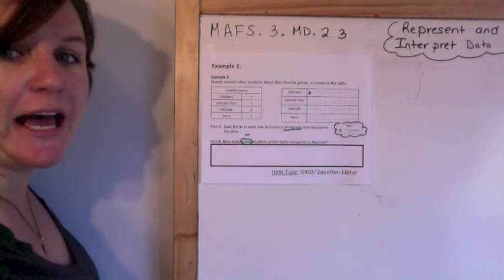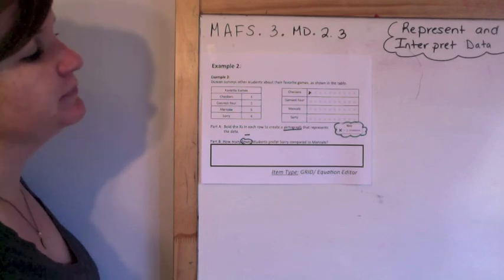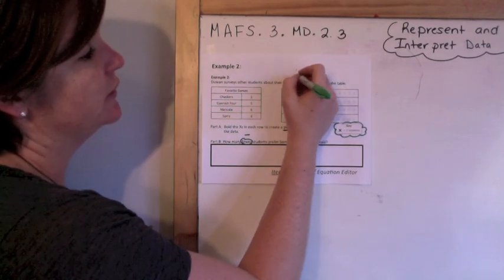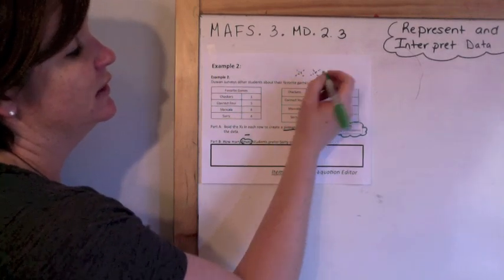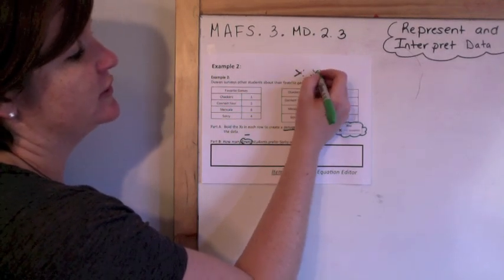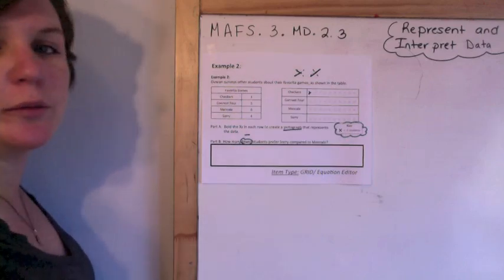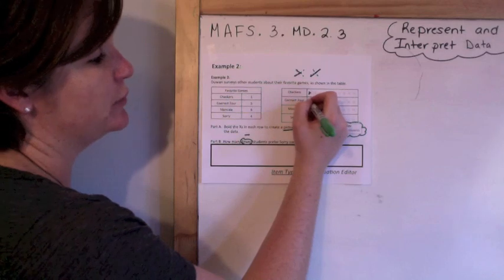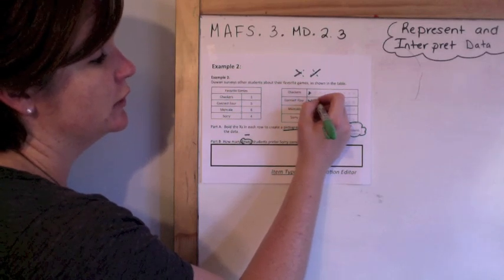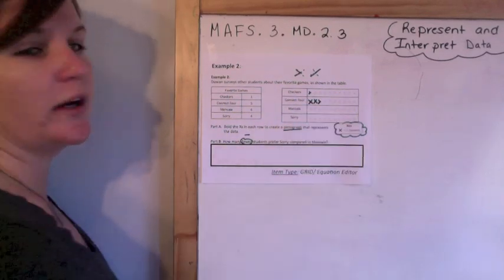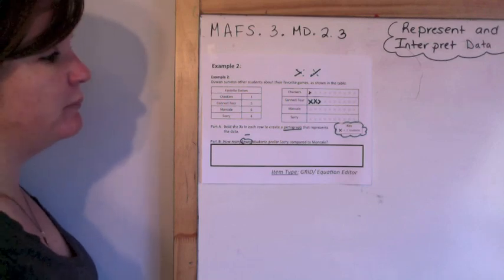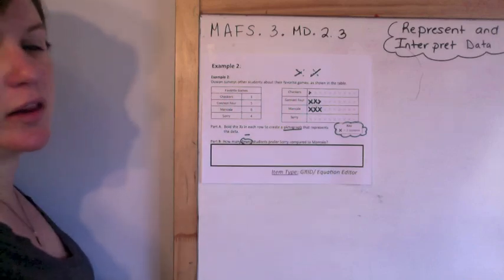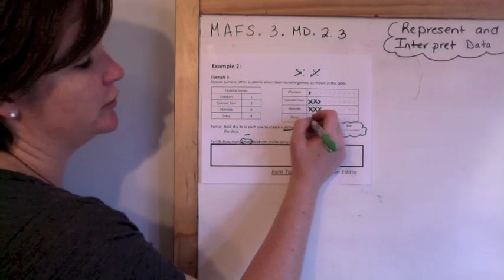Connect Four is five people, so we have two, four, plus one is five. Mancala is six, so two, four, six people like Mancala. And Sorry, four people like it, so two, four people like it.